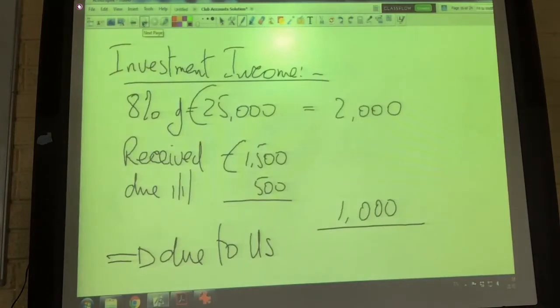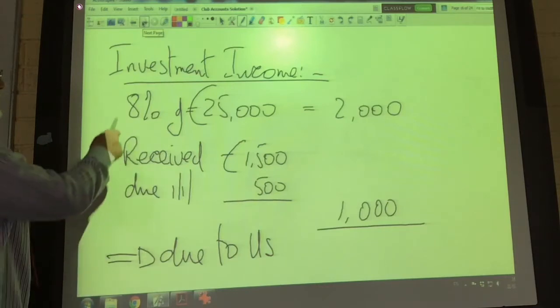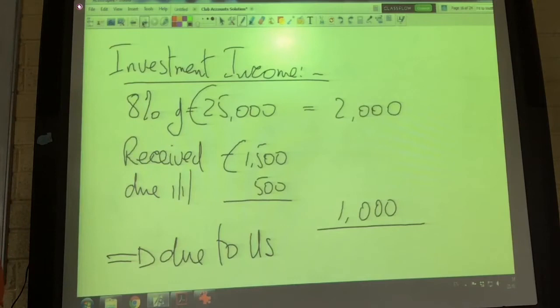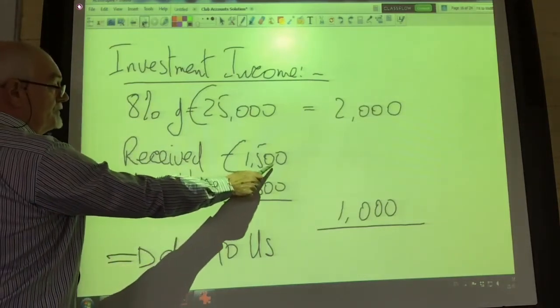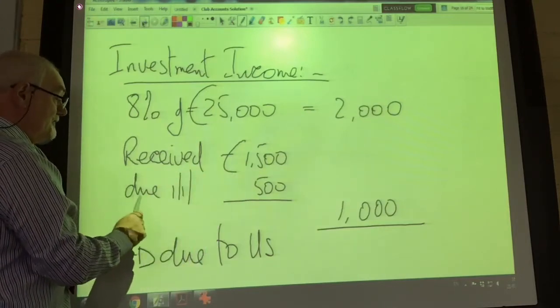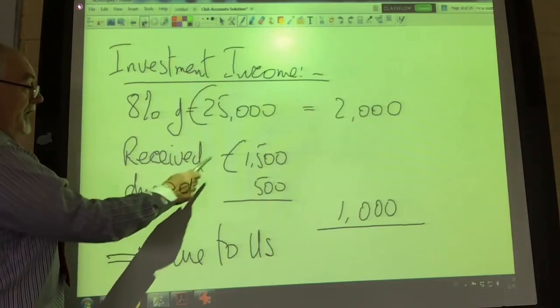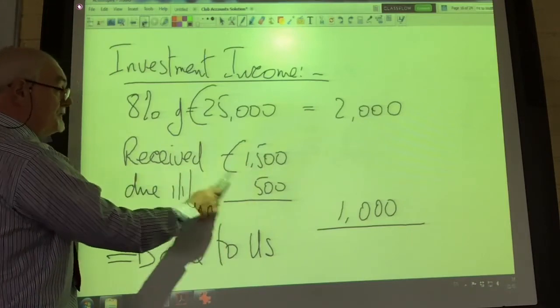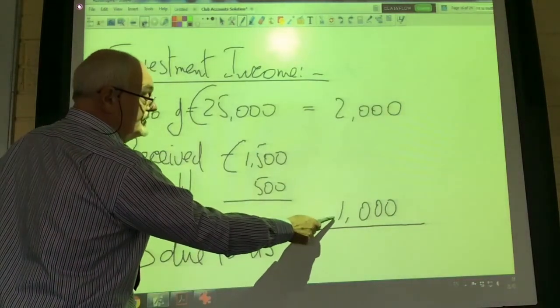Investment income. The question tells us about 25,000 euro worth of investments earning 8%, which equals 2,000 euro. If you check your receipts and payments account, you'll see we received 1,500 during the year. But at the start of the year we were owed 500 euro. So of the 1,500 received, 500 belongs to last year, meaning 1,000 belongs to this year.